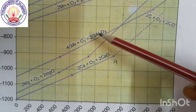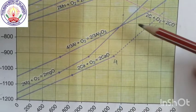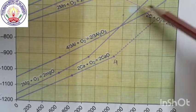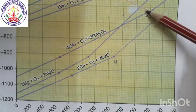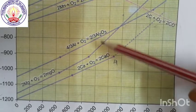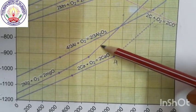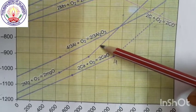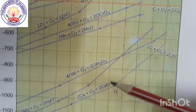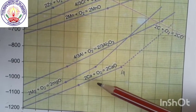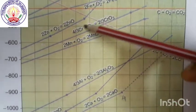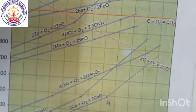After the intersection point, aluminium becomes a better reducing agent than magnesium for aluminium oxide. In the case of calcium, which is lower in the diagram, it can reduce all metal oxides that lie above it, including those of aluminium and magnesium.